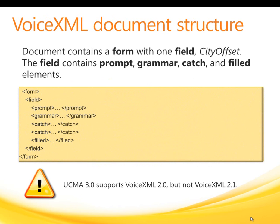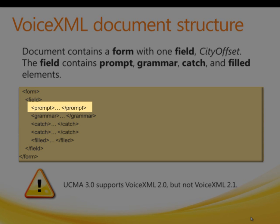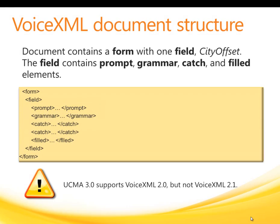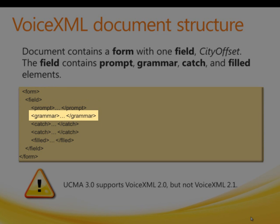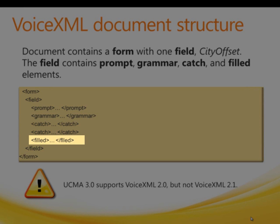This slide shows the high-level structure of the VoiceXML document. Its main purpose is to obtain an input value for the city offset field. The document contains a form element that has within it a field element. The field element contains: a prompt element with the text spoken to the caller; a grammar element with the URL of the SRGS XML grammar used for speech recognition, which contains names of a number of cities; two catch elements executed if specified types of errors occur; and a filled element executed when the city offset input item is filled.